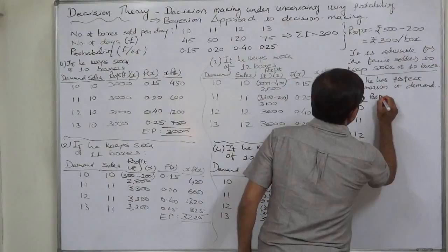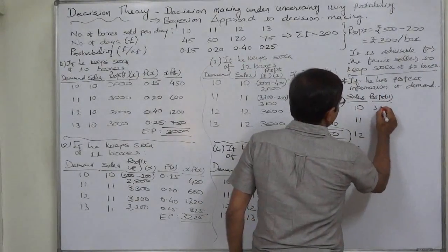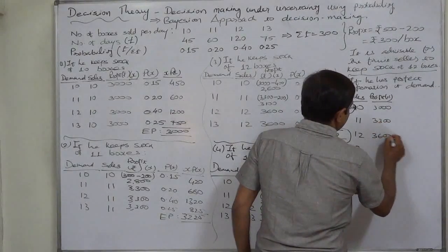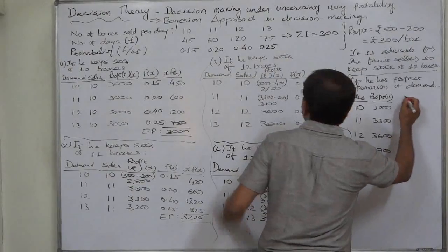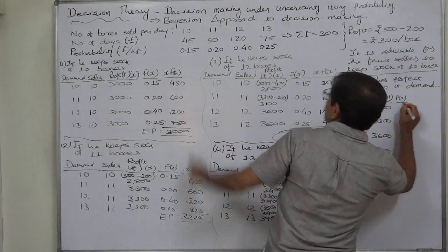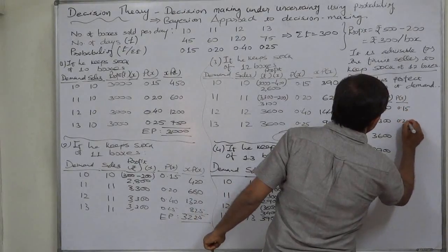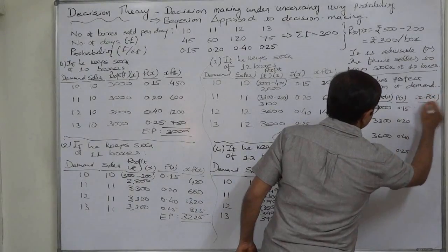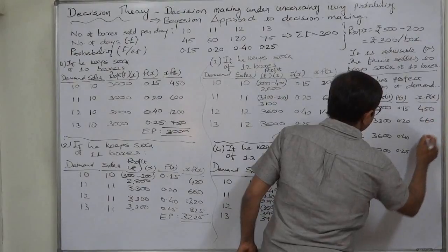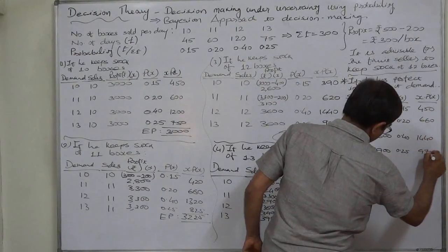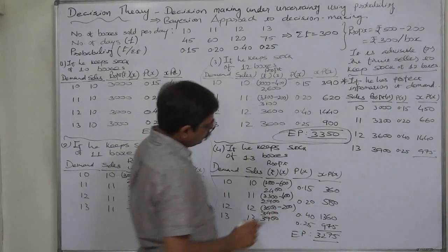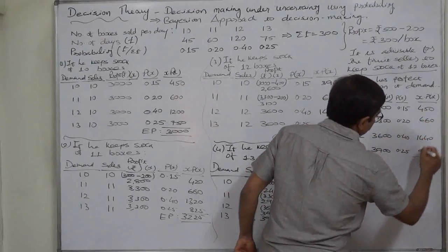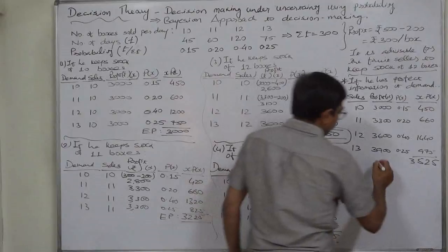The profit will be: on 10 boxes — Rs. 3000; on 11 boxes — Rs. 3300; on 12 boxes — Rs. 3600; on 13 boxes — Rs. 3900. The probabilities are 0.15, 0.20, 0.40, and 0.25 respectively. So the expected amounts are 450, 660, 1440, and 975. The total expected profit under perfect information comes to Rs. 3525.